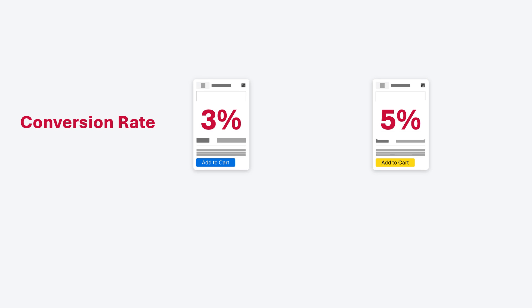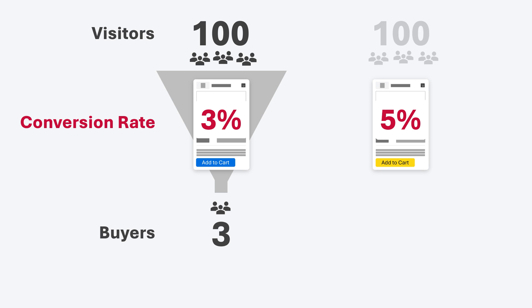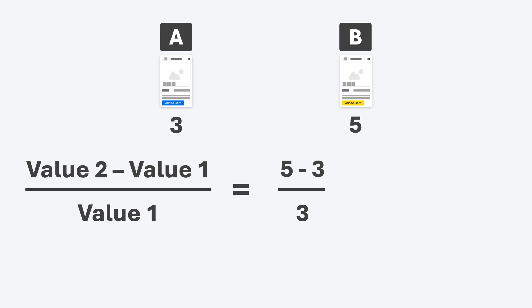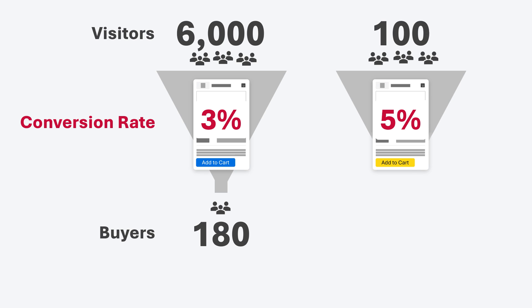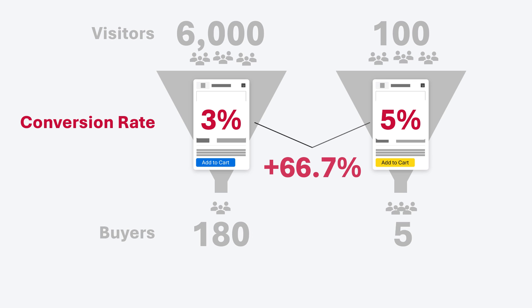I want to take a quick pause and talk about conversion rates, because this is often an area that trips people up. If we have 100 visitors to a page with a 3% conversion rate, that's 3 buyers. With 100 visitors to the other page at 5%, that's 5 buyers. As long as visitor counts are the same, we can compare 3 and 5 in the formula to get the same 66.7% result. But if page A has 6,000 visitors giving 180 buyers, and page B only has 100 visitors giving 5 buyers, we can't compare 180 to 5 — so we use the conversion rates instead.